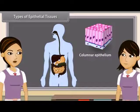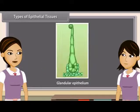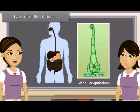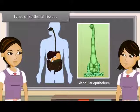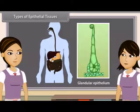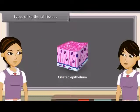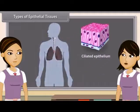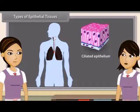The columnar epithelium is sometimes modified to form glands which secrete certain chemicals, converting it into glandular epithelium. It is found in the mucous membrane of stomach, sweat, and oil glands. Some cuboidal or columnar cells have a free border bearing thread-like cytoplasmic outgrowths called cilia. These cells form the ciliated epithelium, found in sperm ducts, trachea, bronchi, kidney tubules, and oviducts.